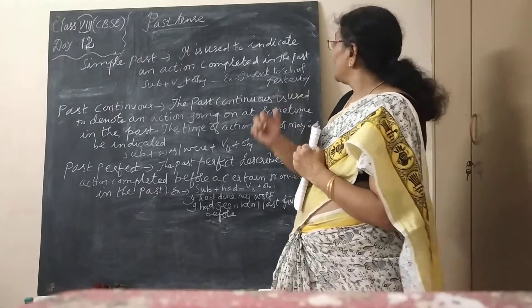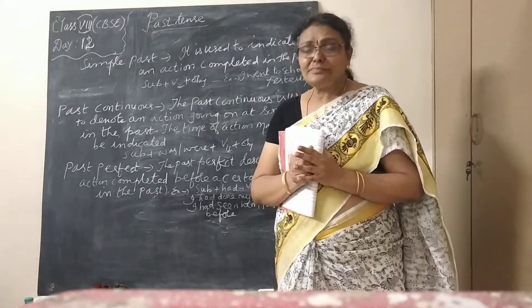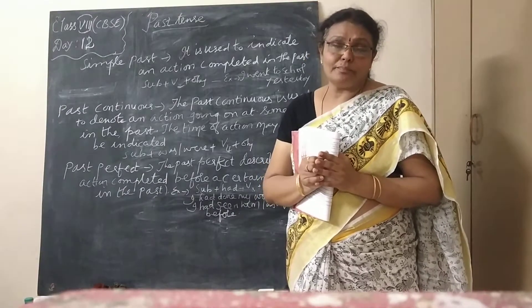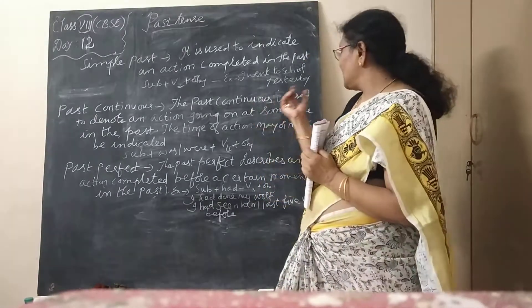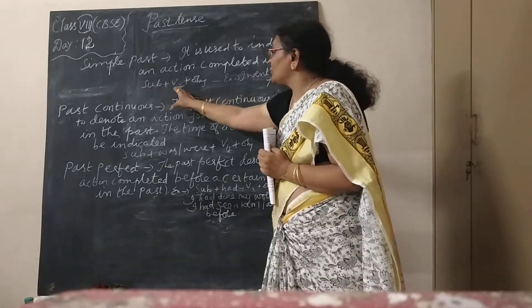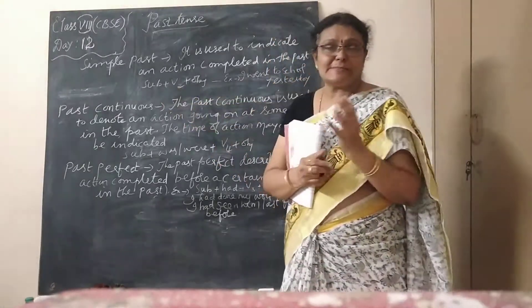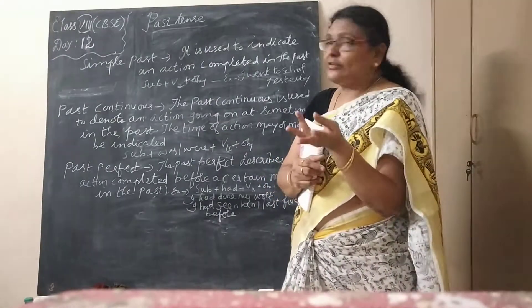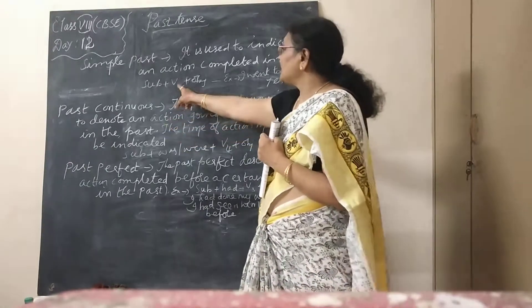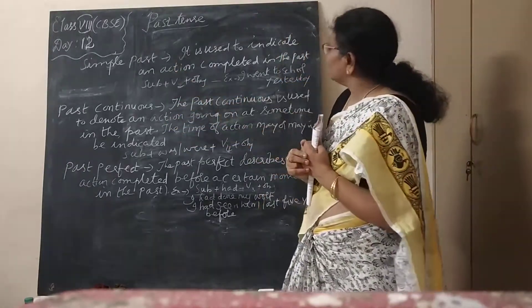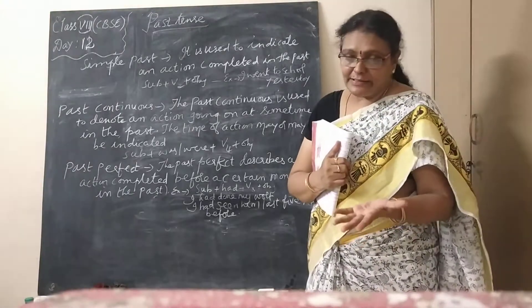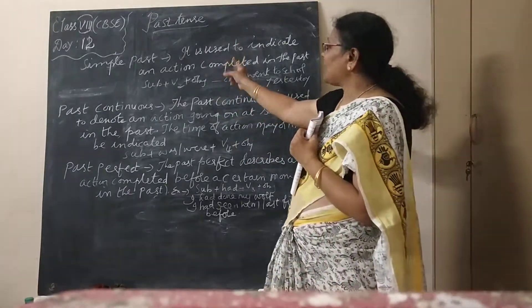Some examples: 'I went to school yesterday,' 'I woke up yesterday,' 'I did my work,' 'I went home yesterday.' These use Subject + V2 + Object. V1 means present tense, V2 means past tense, V3 is past participle, and V4 is the present participle. So V2 means past. An action that has already been completed in the past is called simple past.